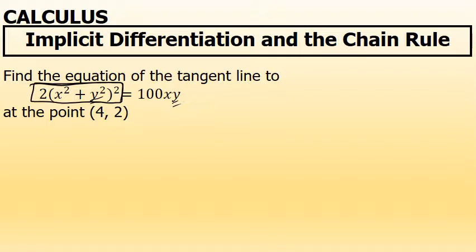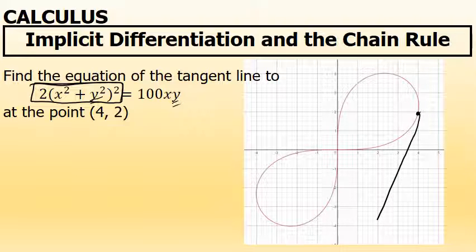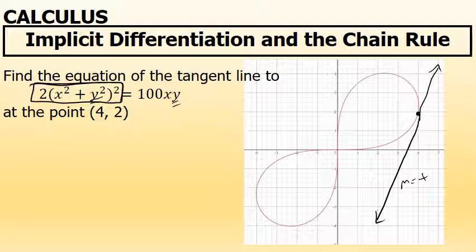It's worth noting that the graph of the equation looks like this, and the tangent line whose equation we're required to find will look like this. We can make some estimations about the equation of this tangent line: I know that the slope will be positive, it will be a relatively steep slope, and the y-intercept of this equation will be negative.